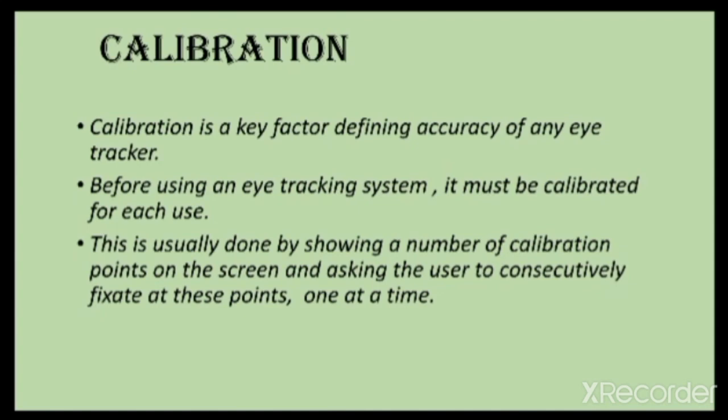Calibration is a key factor defining the accuracy of any eye tracker. Before using an eye-tracking system, it must be calibrated for each use. This is usually done by showing a number of calibration points on the screen and asking the user to consecutively fixate at these points, one at a time.